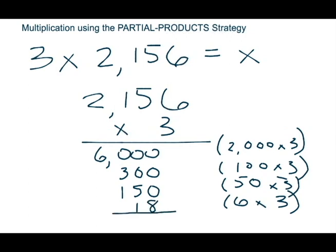Now I write my line. I have 4 products and each of those 4 products is a partial product of the whole product. So now I'm going to take 6,000, 300, 150, and 18 and add them all together. When I add them all together I get 6,468. So 6,468 is the product of 3 times 2,156, and that is x.